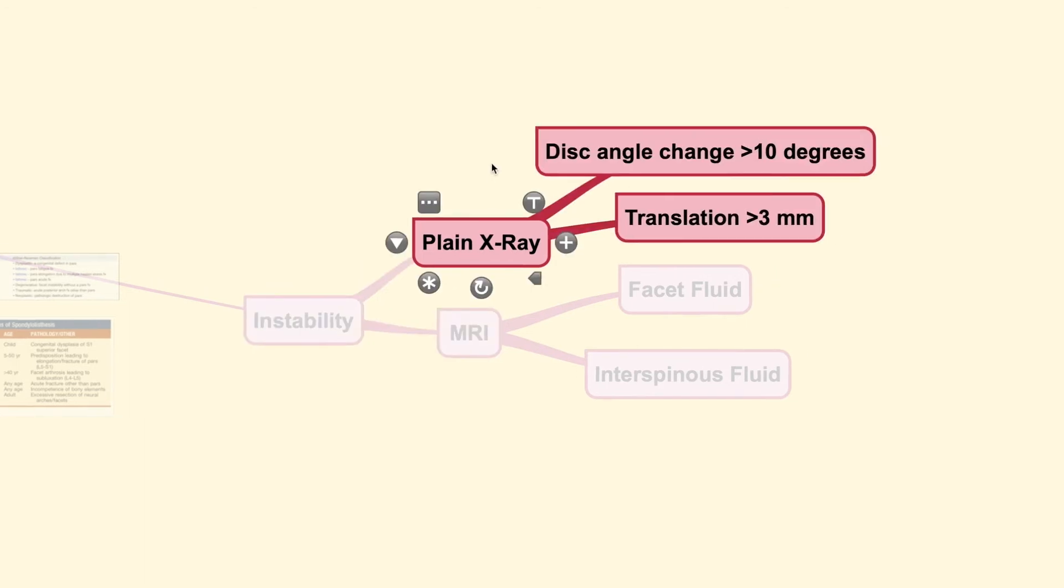On the plain x-ray, usually during the change of body position, whether it is in a flex or in extended position, the disc angle remains rather constant. But if in these dynamic x-rays or x-rays that are taken dynamically in a flex position or in extended position, when there are this angle change exceeding 10 degrees or translation of the vertebral body exceeding 3 mm, then the spine is considered unstable. These values vary according to various authors.